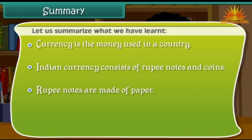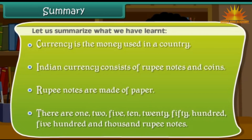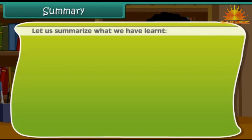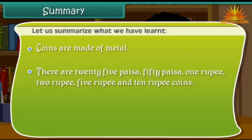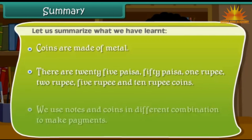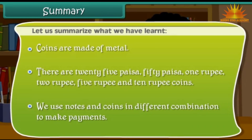Rupee notes are made of paper. There are 1, 2, 5, 10, 20, 50, 100, 500 and 1000 rupee notes. Coins are made of metal. There are 25 paisa, 50 paisa, 1 rupee, 2 rupee, 5 rupee and 10 rupee coins. We use notes and coins in different combinations to make payments.